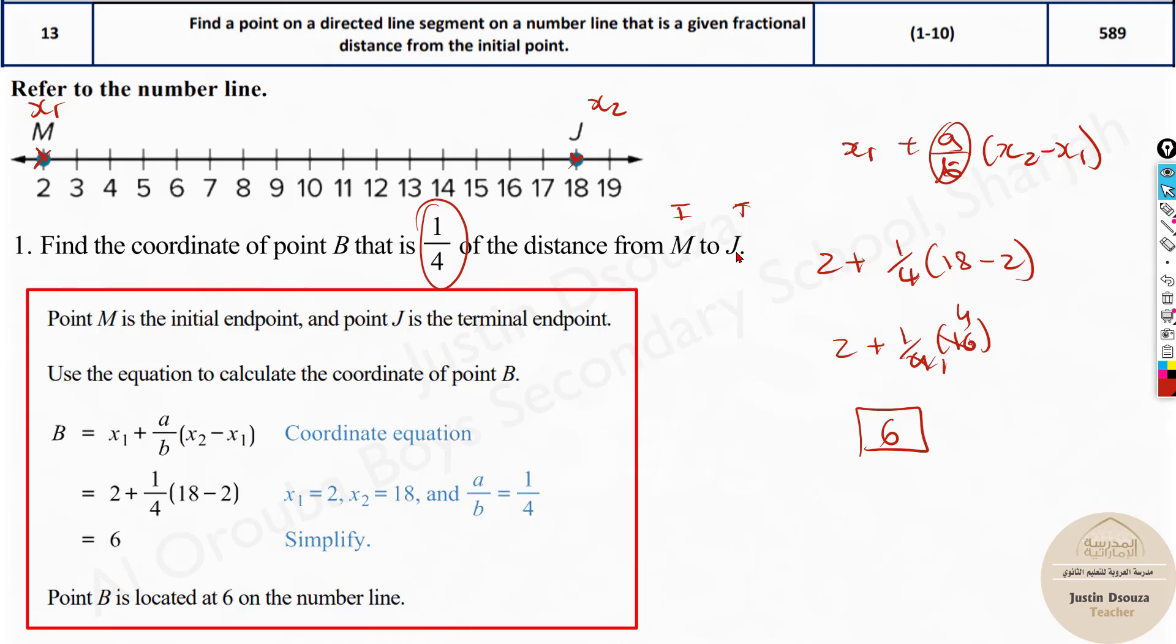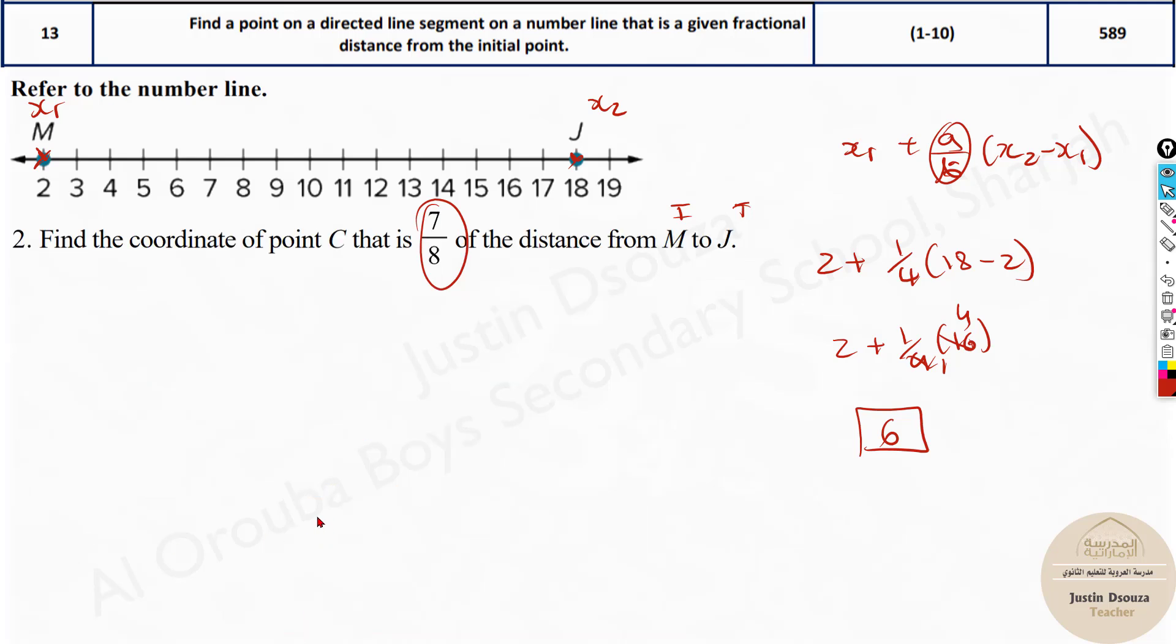So the answer is 6. Same way you can try the others over here. Only thing that changes is this ratio and the points. The number line is the same so you don't need to change, just the ratio changes to 7 by 8.